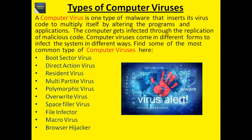A polymorphic virus is difficult to identify with a traditional antivirus program because it alters its signature pattern whenever it replicates. An overwrite virus deletes all the files it infects; the only way to remove it is to delete the infected files, causing the end user to lose all the contents. A space filler virus, also called a cavity virus, fills up empty spaces between code and hence does not cause any damage to the file.